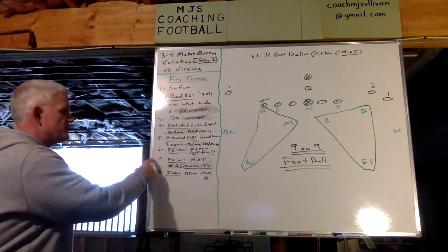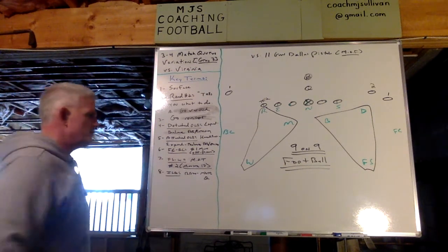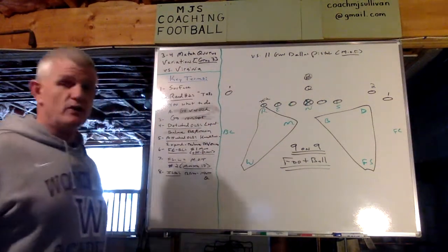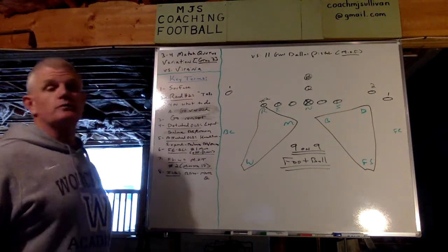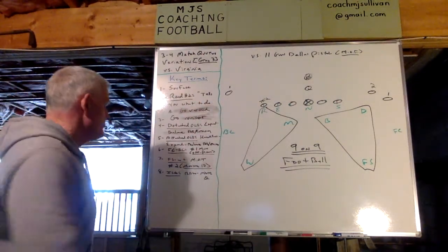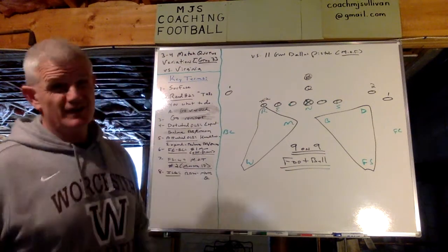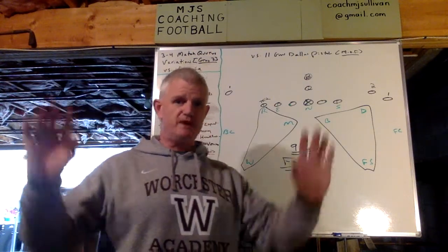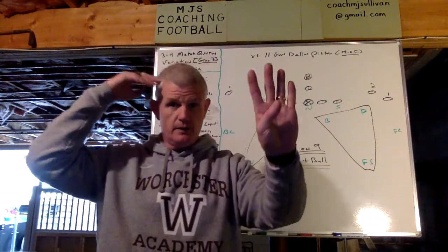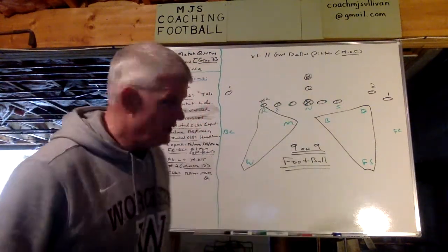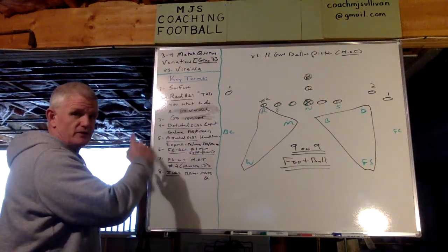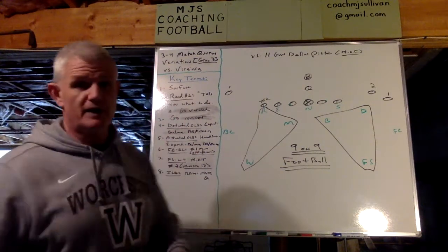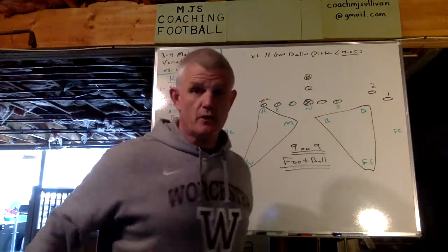Our safeties are number seven — free and whip. Mott is man over 10 on number two. Man over 10, or Mott, on number two. And last, the inside linebackers — their technique and rules are the exact same as our base match quarters gray four. Nothing changes. Surface to two, running back two, or mirror the cue. Since we know number two is going to be on a go vertical.